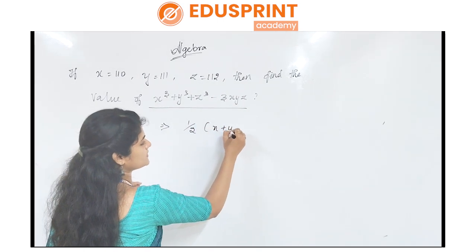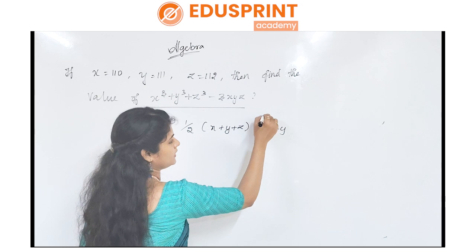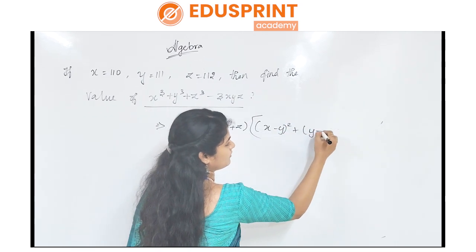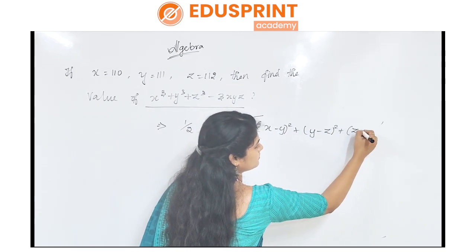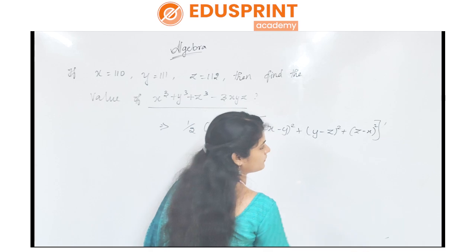Half of x plus y plus z into x minus y the whole square plus y minus z the whole square plus z minus x the whole square formula.